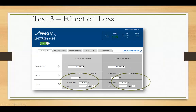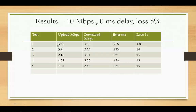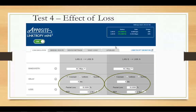Test three: delay set to zero and five percent packet loss applied in each direction — 5% up and 5% down. Rough linear math might suggest 10% combined but it doesn't really work that way. Upload dropped to around 3.95–2.8 Mbps, download was similarly affected, and measured loss rose accordingly. Jitter was similar to before. Don't expect throughput to drop exactly proportional to loss — it just gives you a frame of reference.